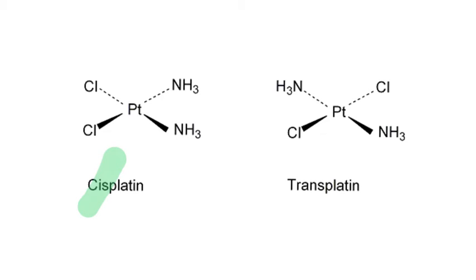Now for the cisplatin, what we're looking at is either the two chlorines or the two NH3s being at a 90 degree angle apart. And that's the most important thing. And then for the transplatin, we can see that they are across from each other, 180 just like before. So it's very similar.